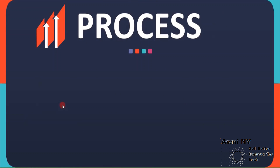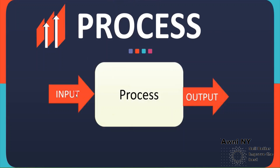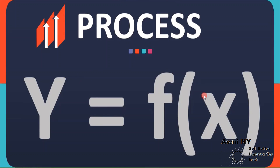Let's now see the second philosophy, which is process. Each process has certain inputs and outputs. In Six Sigma, we look at improving the output by changing the input, because if you don't change your input, your output will not change. Let's understand it with the help of this equation.